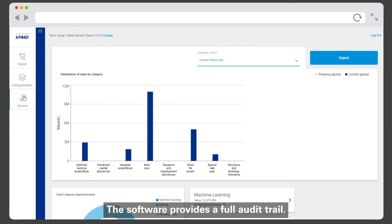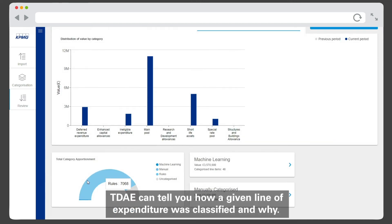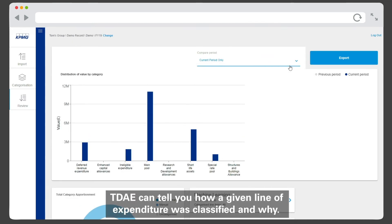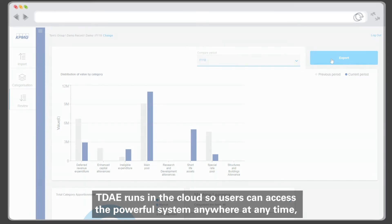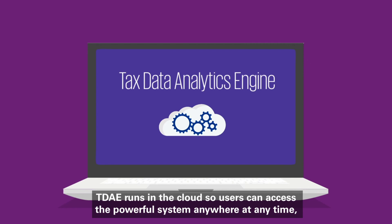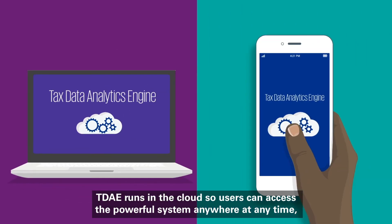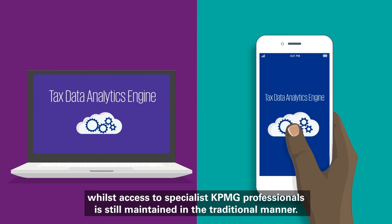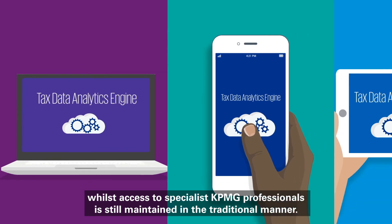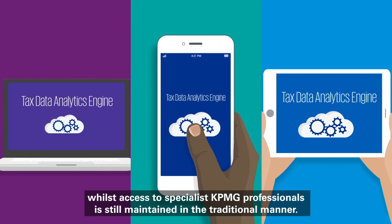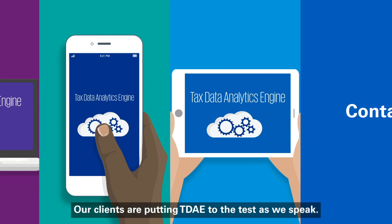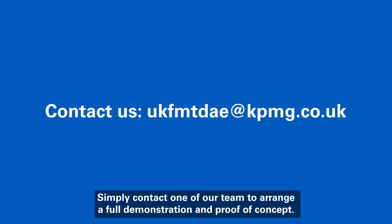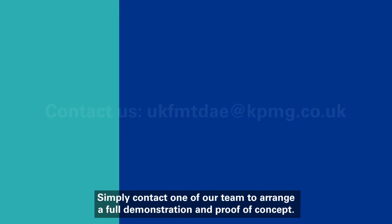The software provides a full audit trail. TDAE can tell you how a given line of expenditure was classified and why, all in a simple-to-share format. TDAE runs in the cloud, so users can access the powerful system anywhere at any time, whilst access to specialist KPMG professionals is still maintained in the traditional manner. Our clients are putting TDAE to the test as we speak — simply contact one of our team to arrange a full demonstration and proof of concept.